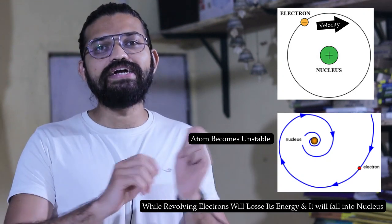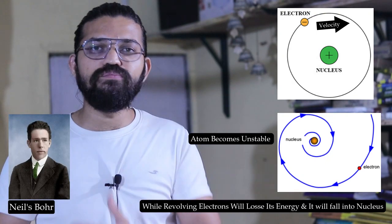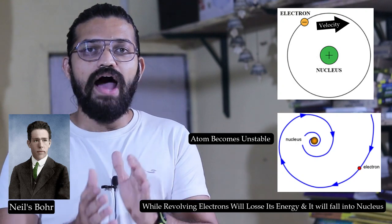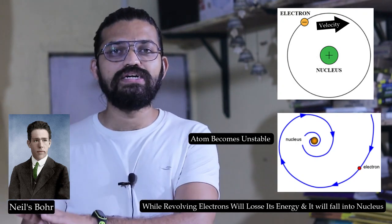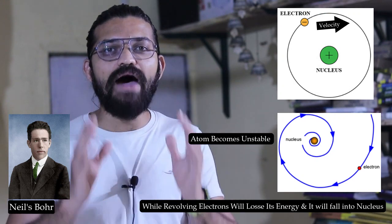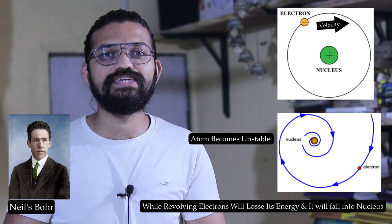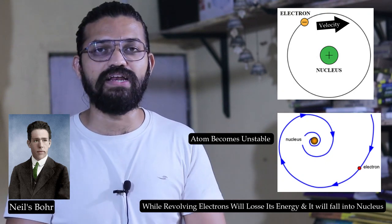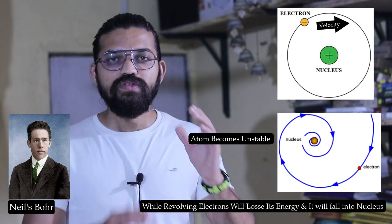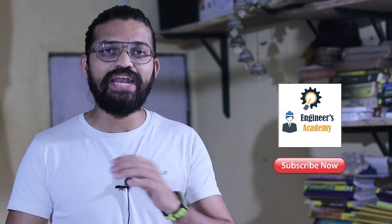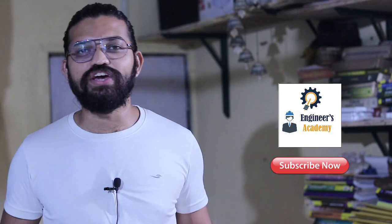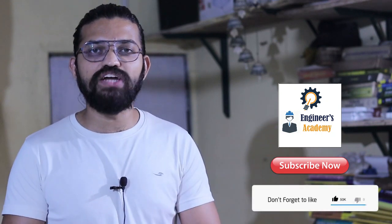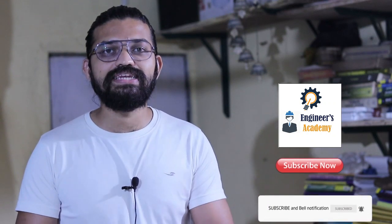In order to correct this, in 1930, Niels Bohr postulated some points to the previous model of Rutherford. He added points to make that model more appropriate and correct, as we can see today. In this particular video, we are going to learn Bohr's atomic model, which he developed in 1930. If you are new here on Ingenious Academy, please consider subscribing and press the bell icon so you get instant notifications whenever I upload a new educational video. Without wasting any time, let's begin with Bohr's atomic model.